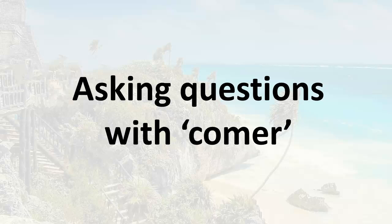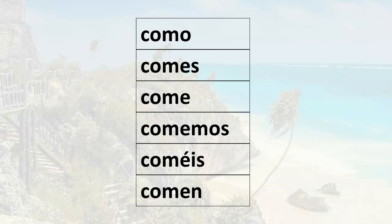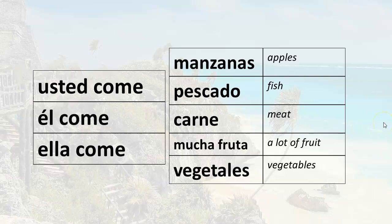Hi everyone. In our last lesson, we learned how to conjugate the verb comer in the present tense. Remember that comer is a regular ER verb. If you can conjugate comer, you can conjugate any regular ER verb. So just as a reminder, these are the forms of comer in the present tense: como, comes, come, comemos, coméis, and comen.